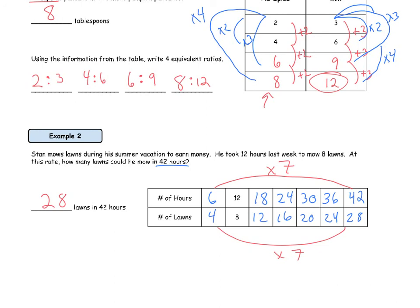So that's video lesson number two on ratio tables and equivalent ratios. I hope you're able to answer our question of the day: how can we use ratio tables to find equivalent ratios? We were able to define an equivalent ratio as two or more ratios that express the same relationship between the numbers. We were able to see equivalent ratios on a vertical ratio table and a horizontal ratio table. I hope you guys have a good day, and I'll see you next class.